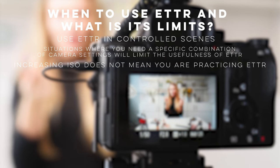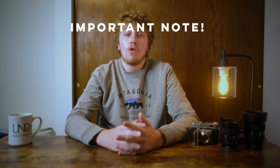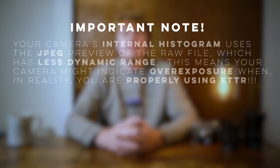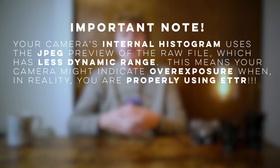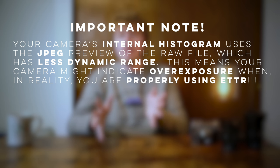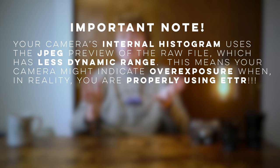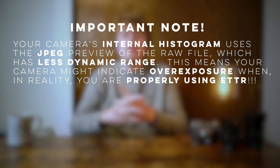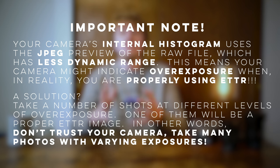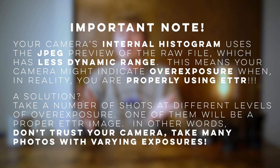ETTR will also take some practice to master. One thing I have noticed on my Sony camera is that the image preview on the back of the LCD may show blown-out highlights when in fact they are not. This is because on Sony and most other digital cameras, when you preview the shot and view the histogram, the camera is using a JPEG preview of the RAW file, which has less dynamic range. On my Sony, the discrepancy can be close to two to three stops, which is huge. Due to this, I always shoot multiple shots with different settings — at least one to match what the camera says is correct exposure, and at least one to match what I think my computer will take as correct exposure.